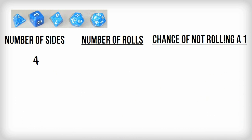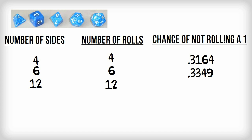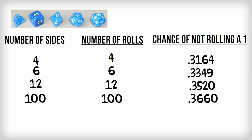Roll a 4-sided dice 4 times. The chance of not rolling a 1 is 0.3164, about 31.6%. Now roll a 6-sided dice 6 times — more sides, so more rolls. The chance of not rolling a 1 is 0.3349. A 12-sided dice with 12 rolls gives a probability of 0.352. Use a computer to simulate 100 rolls of a 100-sided dice, and the chance gets closer and closer to 1 divided by E.